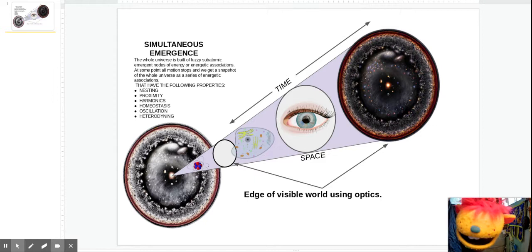At some point, all motion stops when we get into a smaller and smaller period of time. At that point, we get a snapshot. We don't get a snapshot of one tiny little piece. We get a snapshot of the whole darn thing.